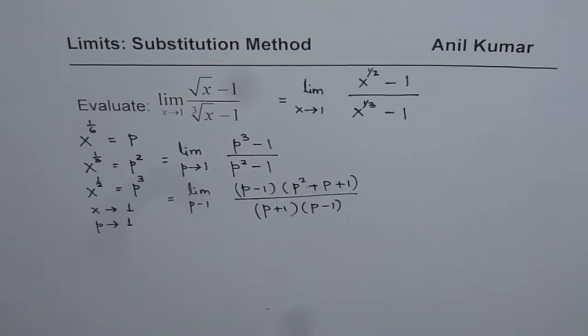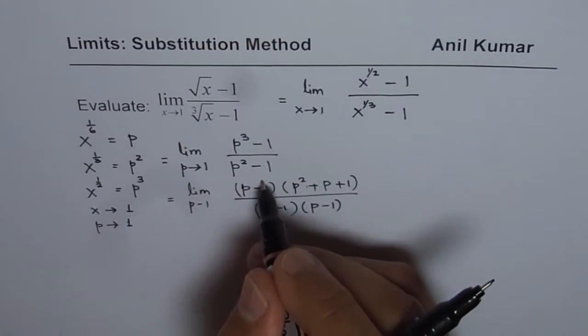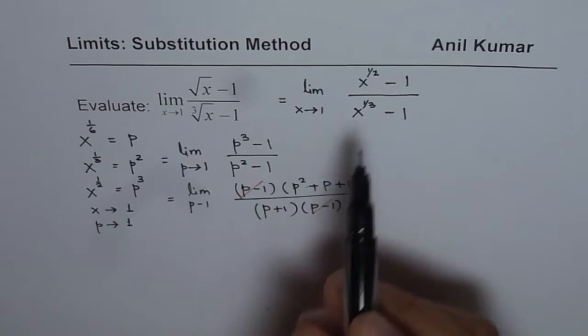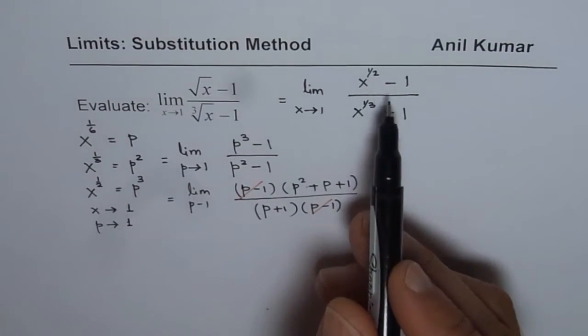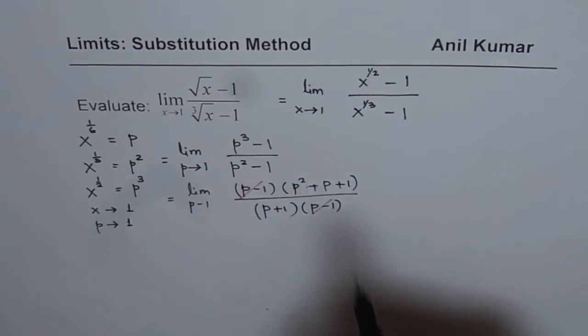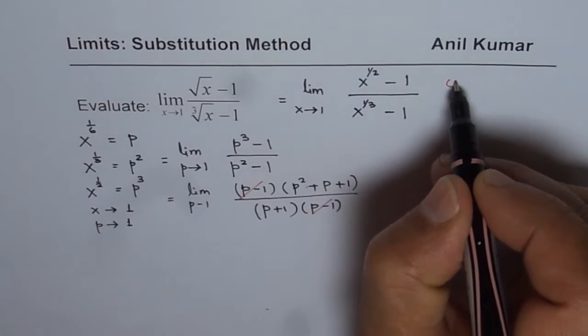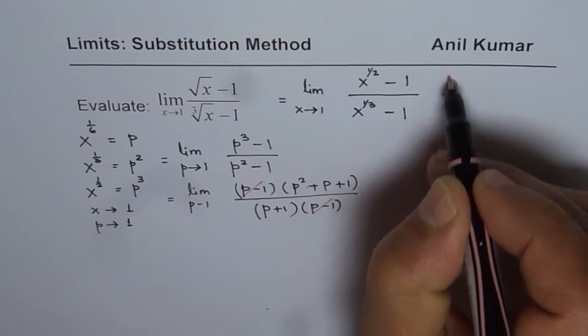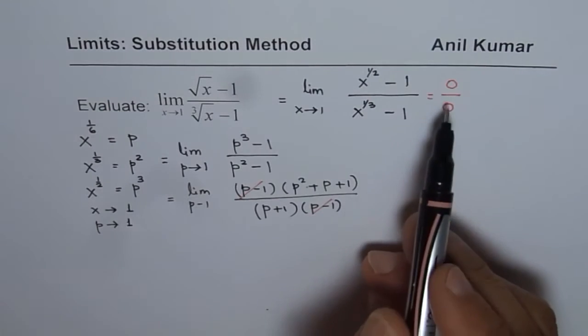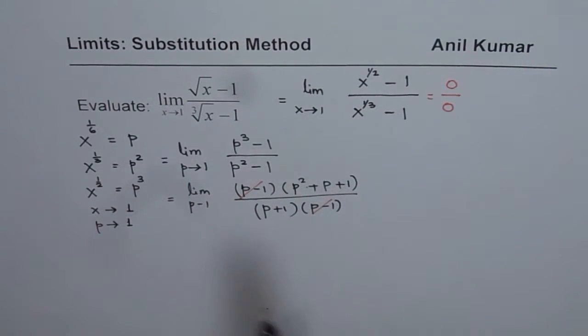Now, p minus 1, p minus 1 are the common factors. They were resulting this limit to be undefined, right? So once you substitute 1 here, you get 0 over 0, correct? Since it was 0 over 0, there was a common factor, and this is the common factor.